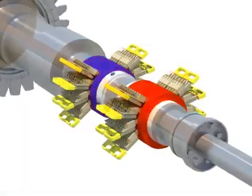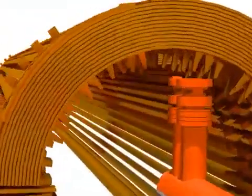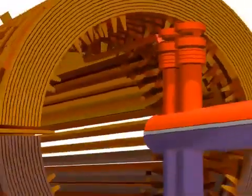The current provided from the exciter flows through the brush and collector ring to the rotor coil to form a magnetic field.